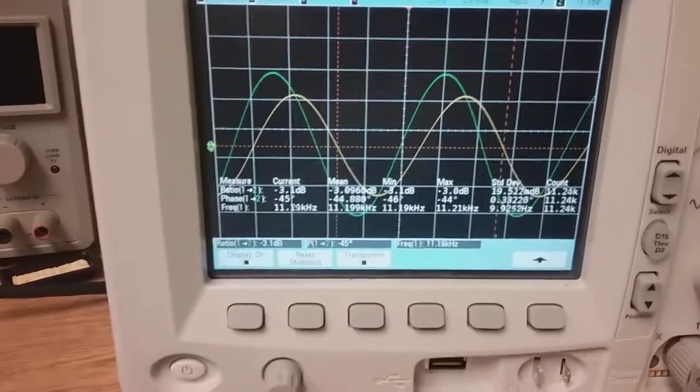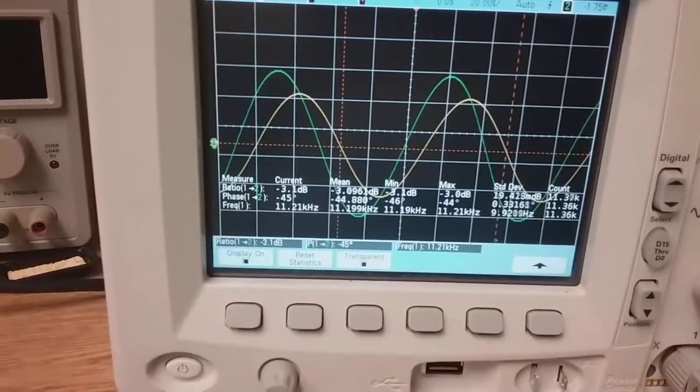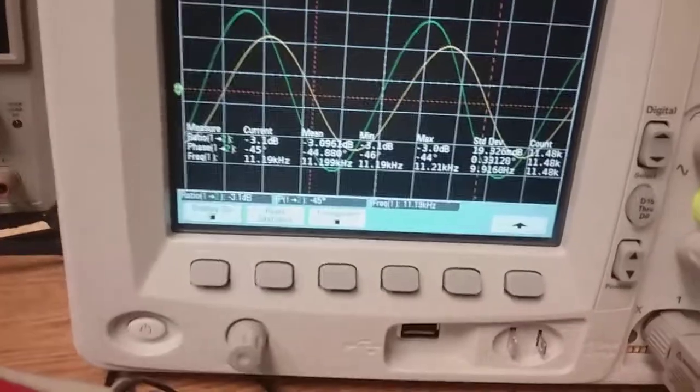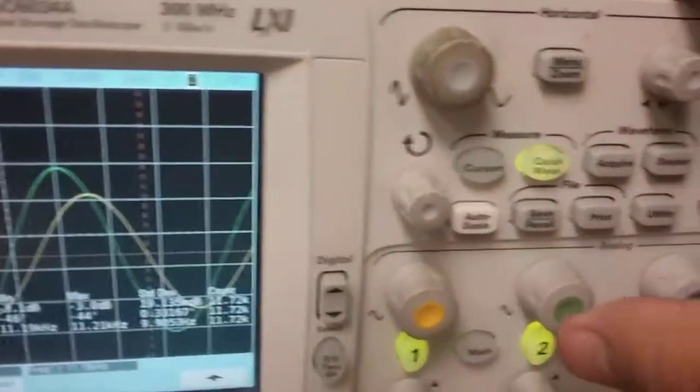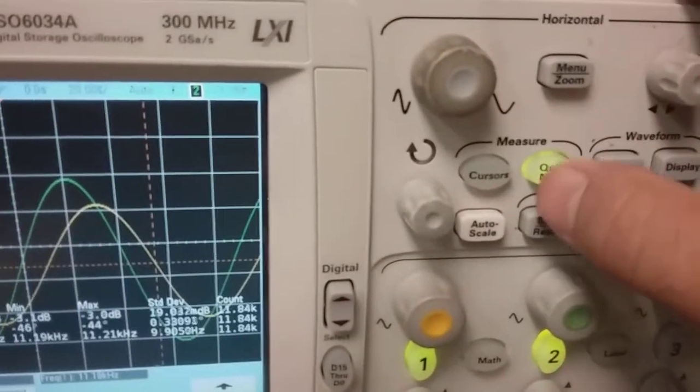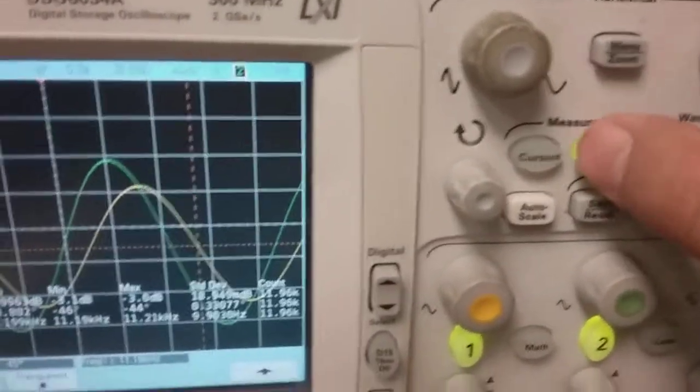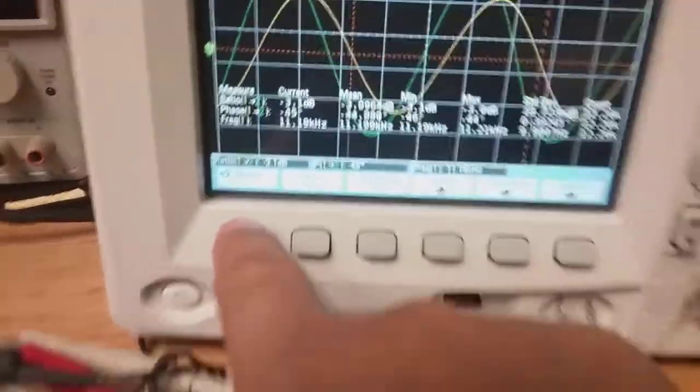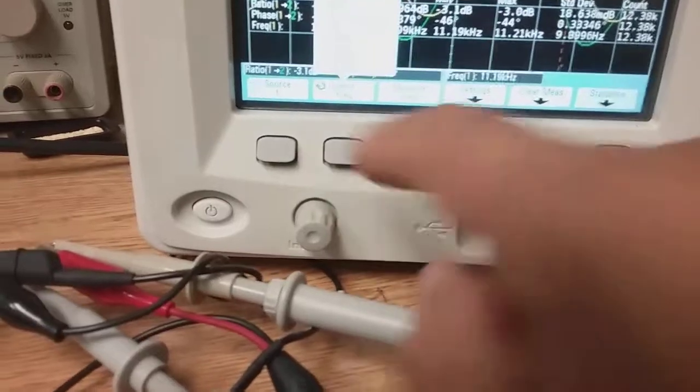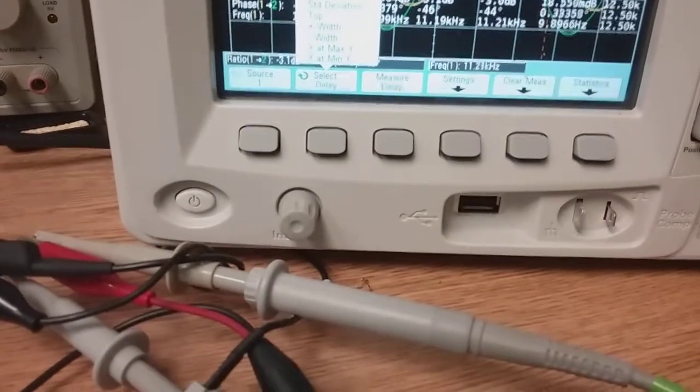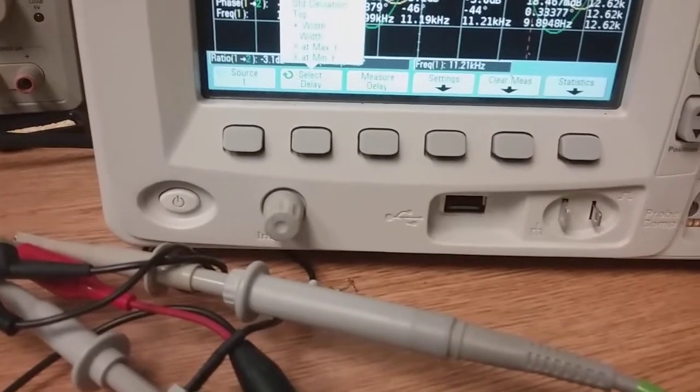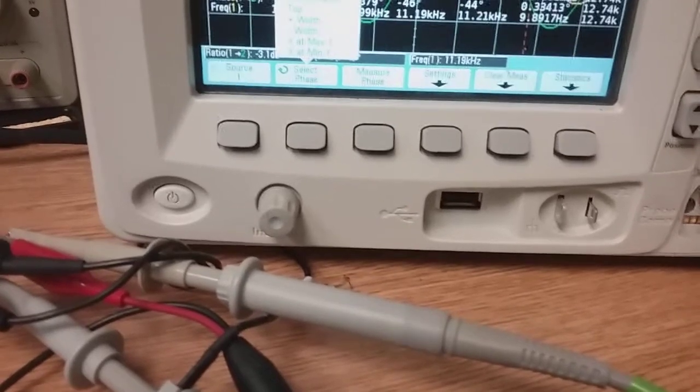Now to take these measurements, really each scope's a little bit different, but there should be a measurement, something like quick measure, and then these things will come up. Which source do you want, and then which function? There's amplitude peak to peak.